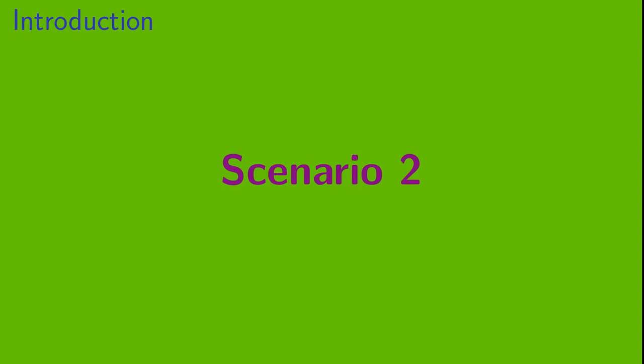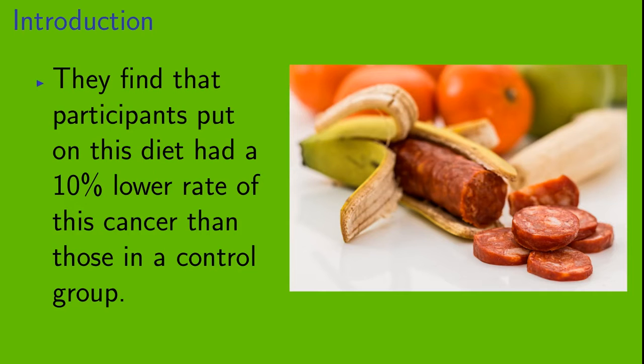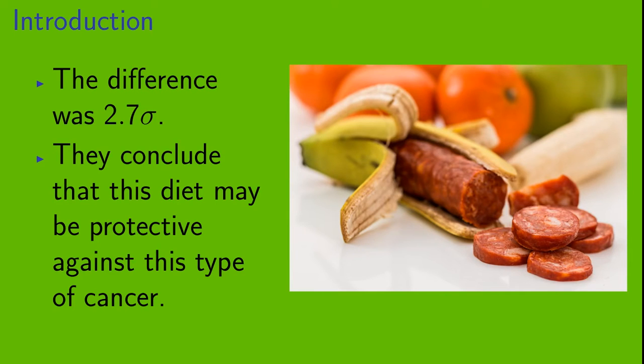Scenario 2. Medical researchers investigate if a specific diet affects the probability of developing a certain type of cancer. They find that participants put on this diet had a 10% lower rate of this cancer than those in a control group. The difference was 2.7 sigma. They conclude that this diet may be protective against this type of cancer.